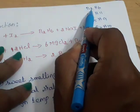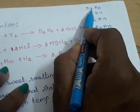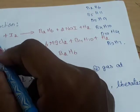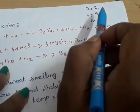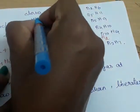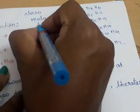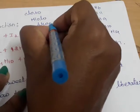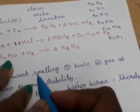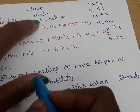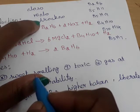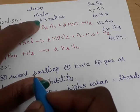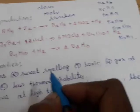Now we are going to see the topic of Diboranes. Diboranes are classified as Closo-boranes, Nido-boranes, and Arachno-boranes. These are the classifications of boranes.